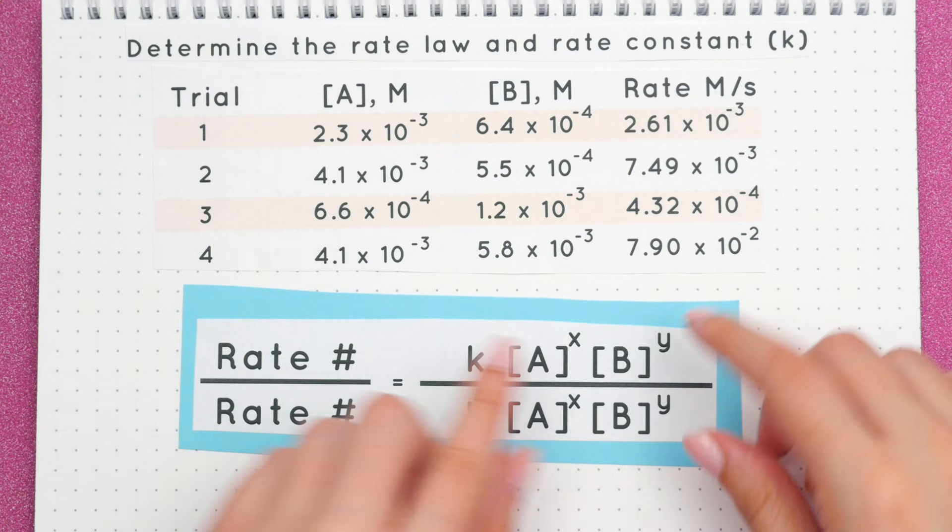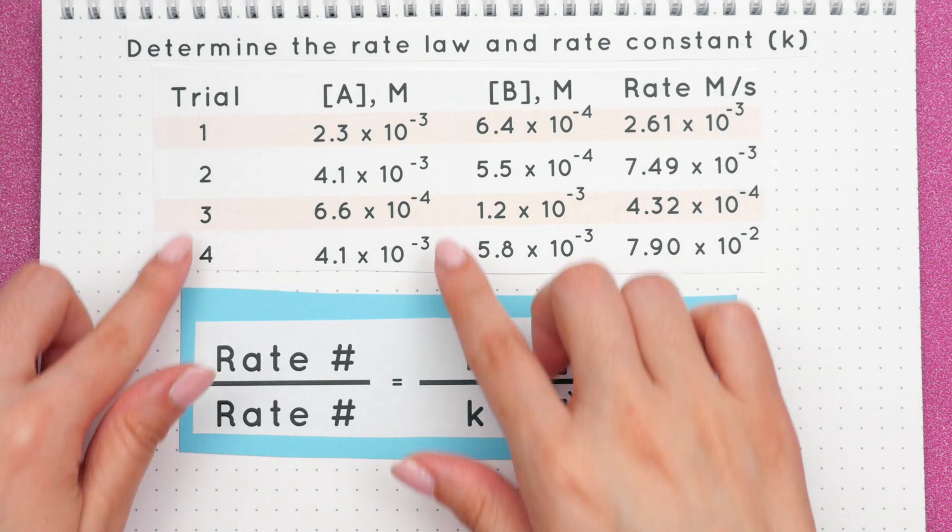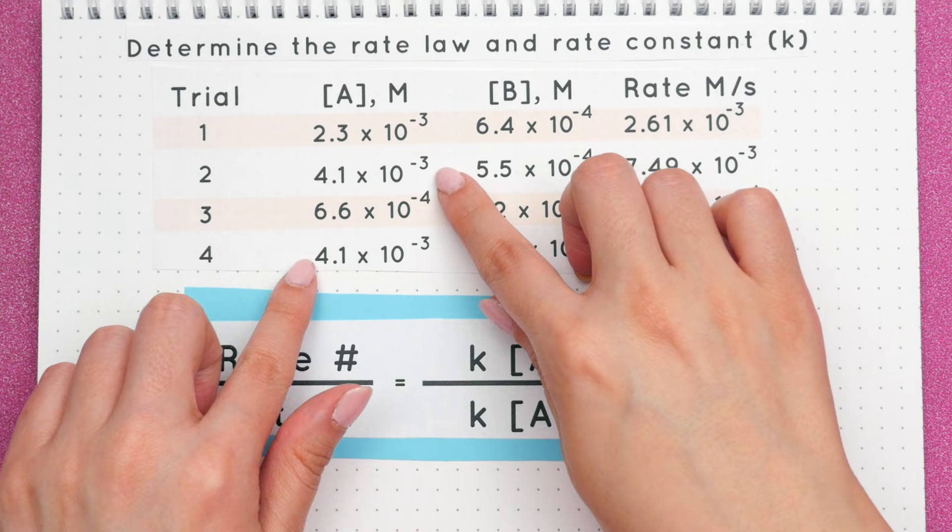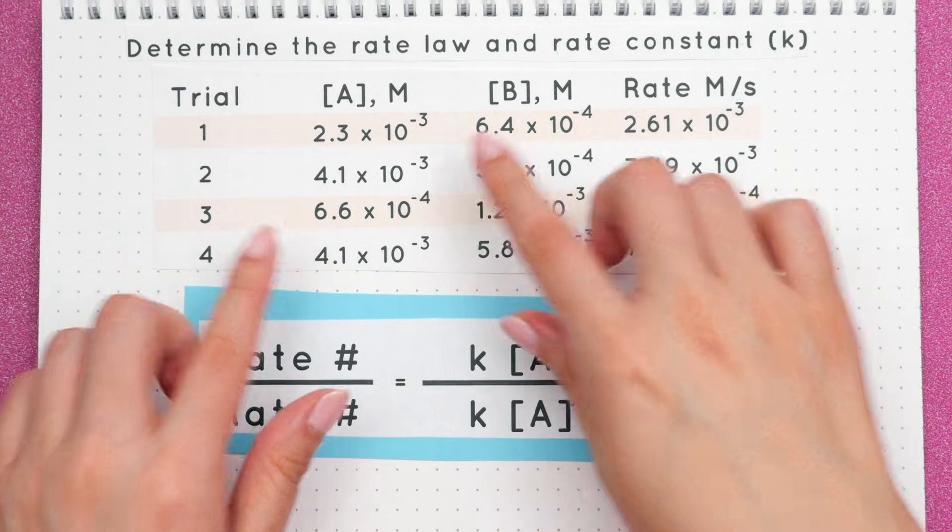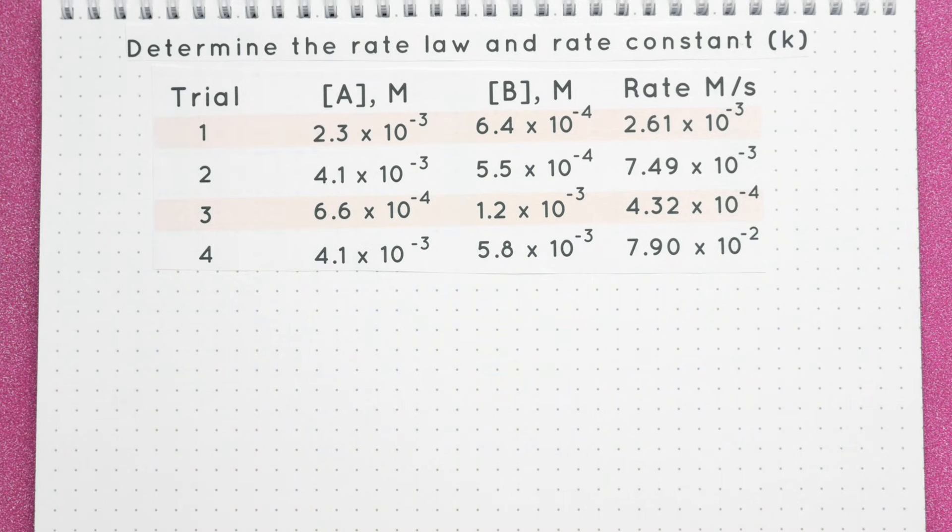We'll use this formula to solve for x and y. Now out of all the trials, only 4 and 2 have the same values for reactant A, so we will use these trials.